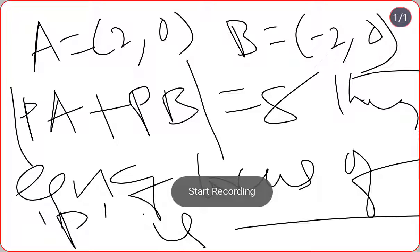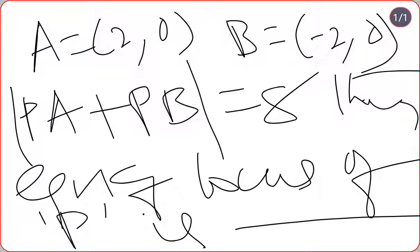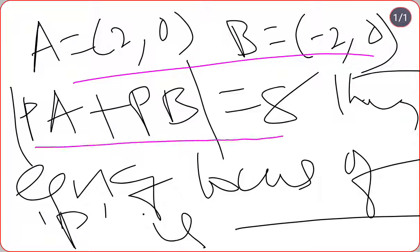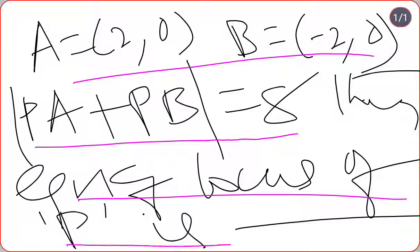Hi friends, welcome back to my YouTube channel. Today we are going to discuss one more shortcut related to locus. The question says: if A equals (2, 0) and B equals (-2, 0), and PA plus PB equals 8, then the equation of locus of P is dash.